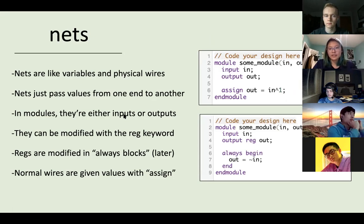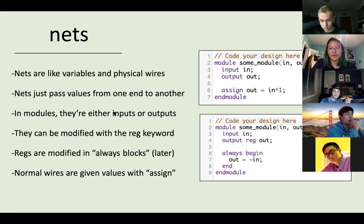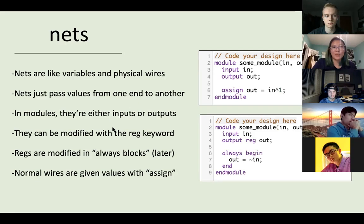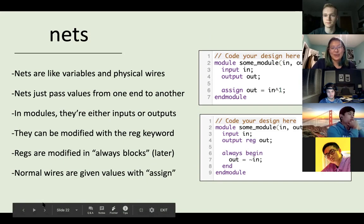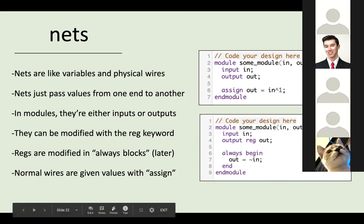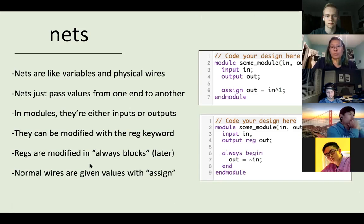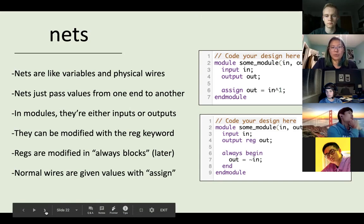Nets are variables that represent physical wires in a circuit — they pass values from one end to the other. They're either inputs or outputs, specified with the keywords 'input' or 'output'. Nets can also be modified in 'always' blocks if you specify the 'reg' keyword — for example, 'output reg out' declares out as an output register. Normal wires are given values using the 'assign' keyword.